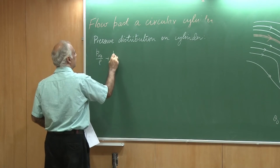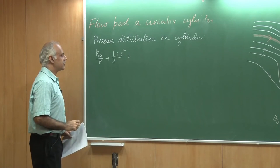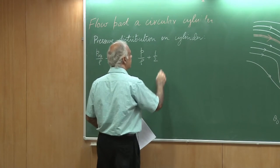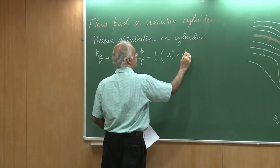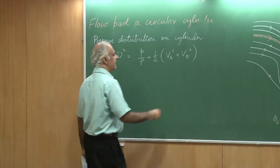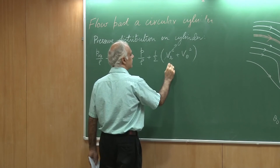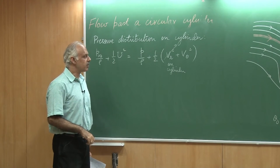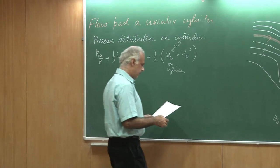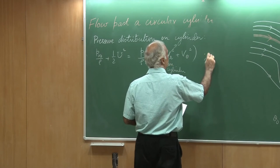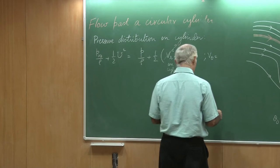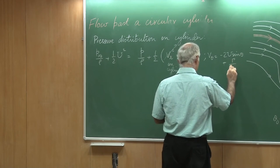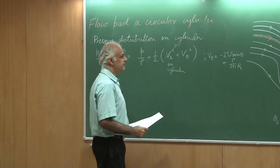P_∞/ρ + ½U² in the free stream would give me pressure on the surface of the cylinder by ρ plus ½ on the surface of the cylinder V_r² + V_θ². We have already seen that on the surface of the cylinder, V_r² is 0. No flow can penetrate the solid body. V_θ is given as -2U sin θ + γ/(2π r).